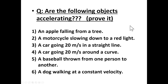Let's check: while the following object is accelerating — an apple falling from a tree will increase its velocity, so the answer is yes. A motorcycle slowing down to a red light: slowing down means the velocity is decreasing, so the answer is yes. A car going 20 meters per second in a straight line: if the speed is not changing and the direction is not changing, then this object is not accelerating. A car going 20 meters per second around a curve: yes, because the car's direction is changing. A baseball thrown from one person to another: yes, there are actually a number of moments where the ball is accelerating in different directions.